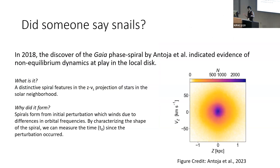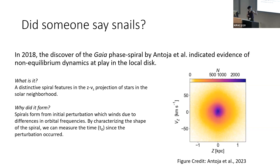This spiral structure is actually a generic dynamical prediction if you have some initial perturbation, and then this perturbation winds due to differences in orbital frequencies. It turns out, because this is a pretty simple structure, you can learn about the time since this perturbation occurred by basically just measuring the shape of this spiral.